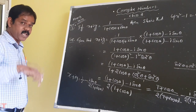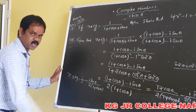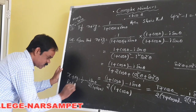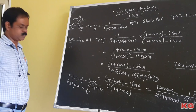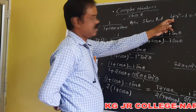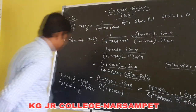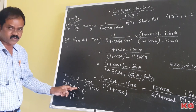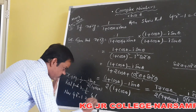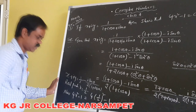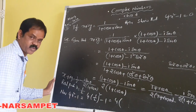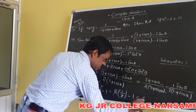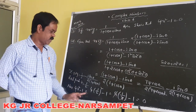Equating real part to real part and imaginary part to imaginary part, the real part gives x equals 1 by 2. According to the problem, we need to show 4x squared minus 1 equals 0. Substituting x equals 1 by 2: 4 times (1/2) squared minus 1 equals 4 times 1/4 minus 1 equals 1 minus 1 equals 0. Therefore 4x squared minus 1 equals 0 is proved.